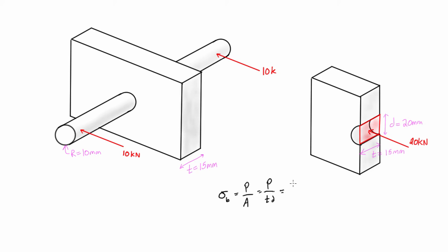So we just get this as equal to 20 kilonewtons over 15 millimeters times 20 millimeters.